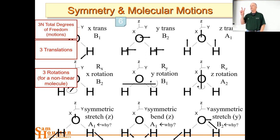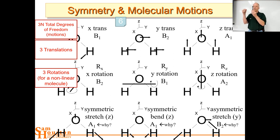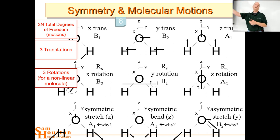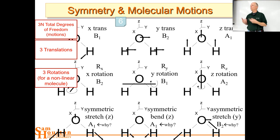A linear molecule only has two rotations, because the motion is defined by its moment of inertia. If you have a linear molecule, all the atoms are on the axis — there's nothing off the axis, so you can't tell if it's rotating around the Z axis, and we lose that rotation. So a linear molecule only has two rotations — write that down, it's important. The reason it's important is because vibrations are defined as anything not translation and not rotation. So if we're wrong on rotation, we're wrong about vibrations, and that will have a huge impact if we're trying to count the number of vibrations.